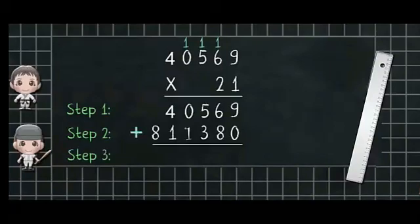Step 3: Now add both the obtained products. So 40,569 plus 811,380. We get the answer 851,949 as product.